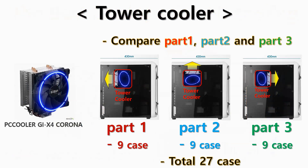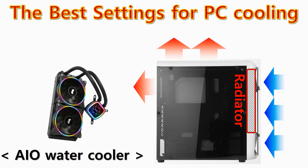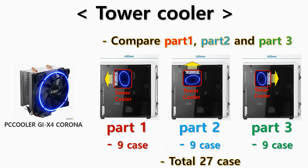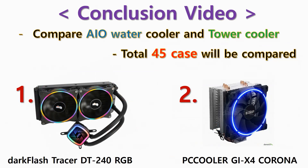So part 3 video is also finished. The next video will be tower cooler parts 1 through 4. In the same way as the AIO watercooler, tower cooler parts 1, 2, and 3 will test 9 cooling fan settings for each direction of tower cooler installation. The results of each part will be collected and compared in part 4. In the final video, I'll compare comprehensive results for 18 AIO watercooler conditions and 27 tower cooler conditions — 45 conditions total.